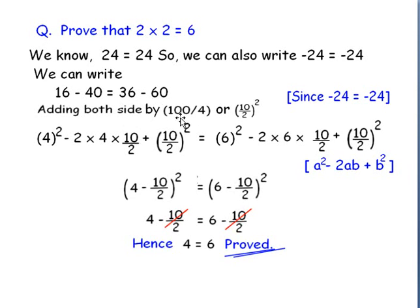And on both the sides, let us add 100 by 4, that is 10 by 2 whole square. So, LHS now becomes 16 as 4 square, and minus 40 as minus 2 into 4 into 10 by 2, and 10 by 2 whole square added on LHS.